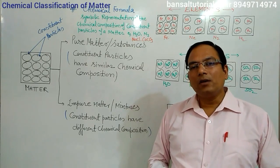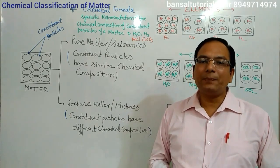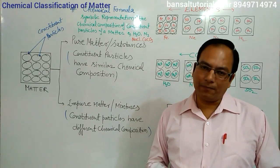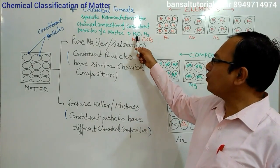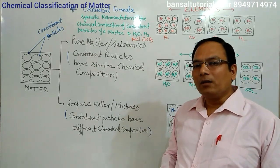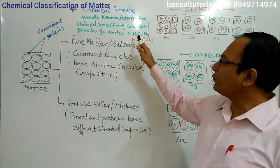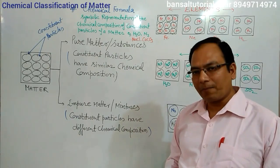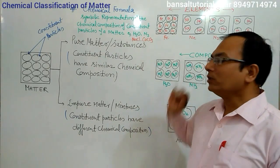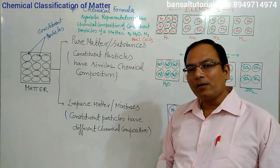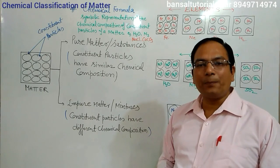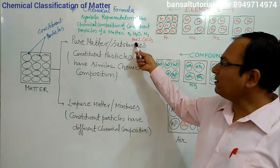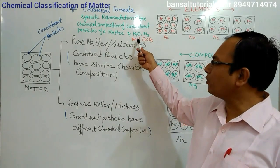A chemical formula is simply a symbolic representation of the chemical composition of the constituent particles of a matter. For example, when we write H2O, it shows that each particle of water is composed of two atoms of hydrogen and one atom of oxygen. This H2O represents one particle of water. In the same way, when we write N2, this is representing nitrogen gas — each particle of nitrogen gas is composed of two atoms of nitrogen. NaCl represents common salt, composed of sodium and chlorine atoms.